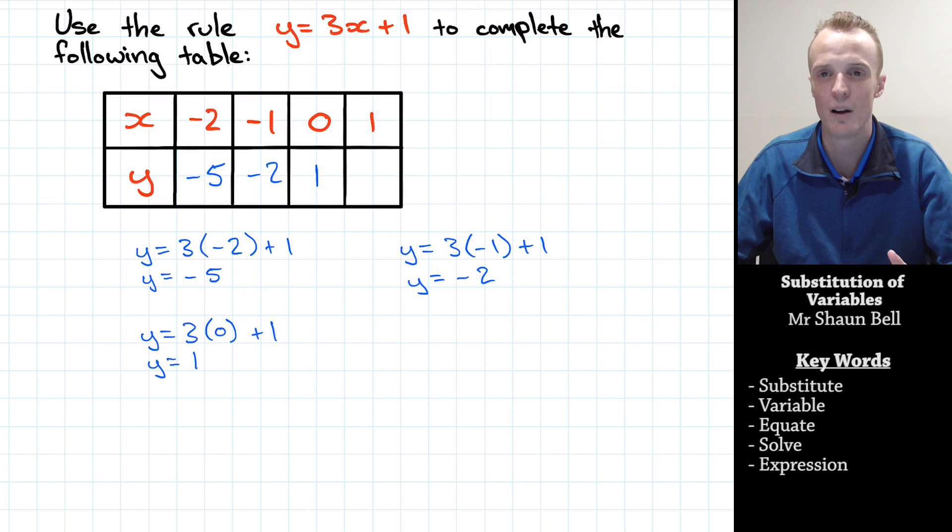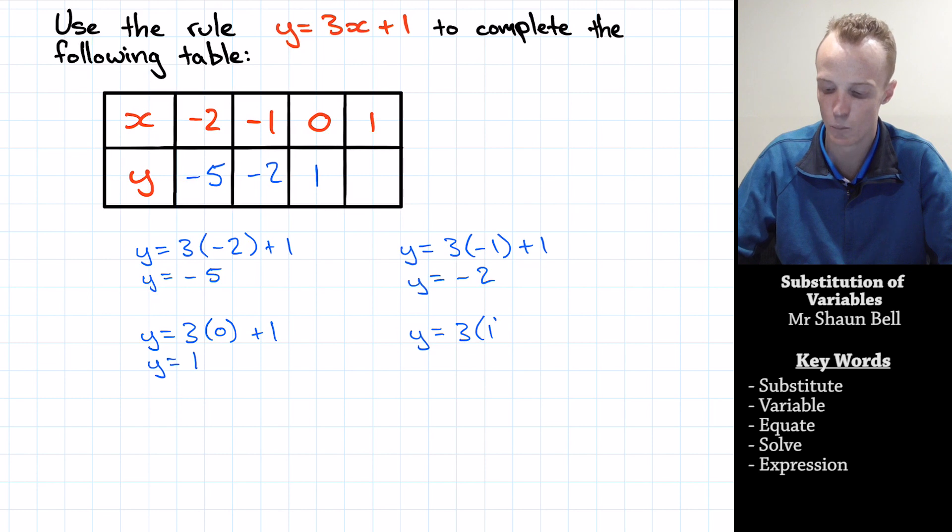Finally, what does y equal when x is equal to 1? Well, y equals 3 times x which is 1 plus our 1. Now y is equal to 3 times 1 which is 3 plus our 1 which is 4.